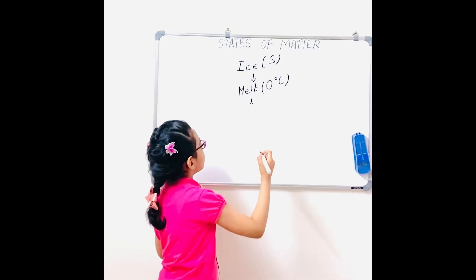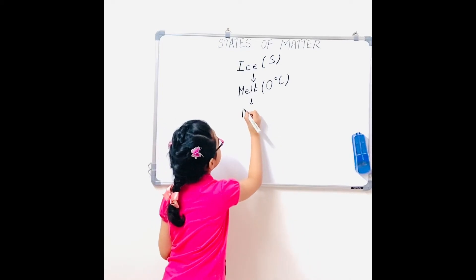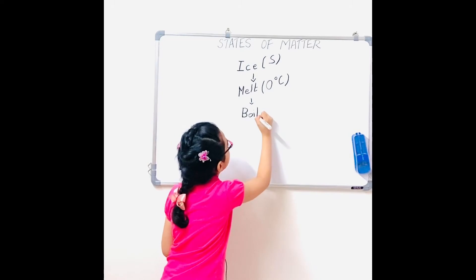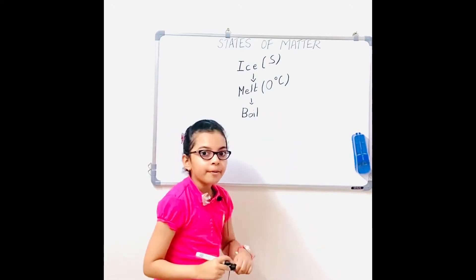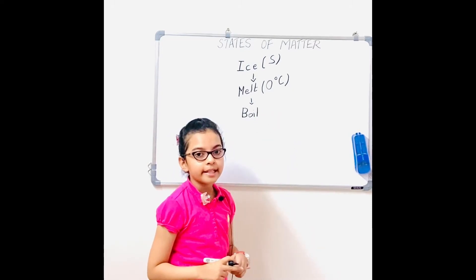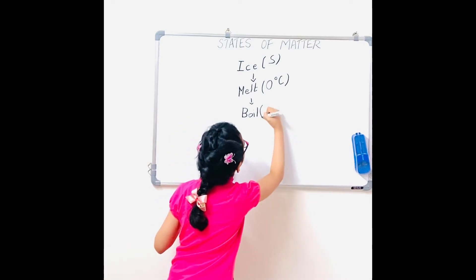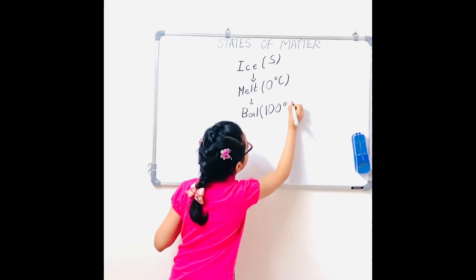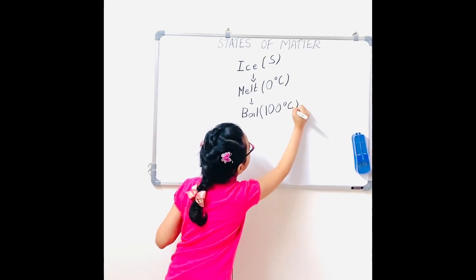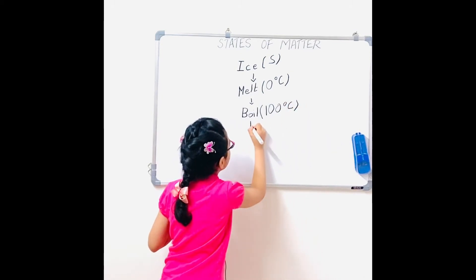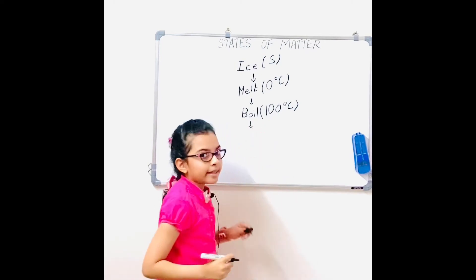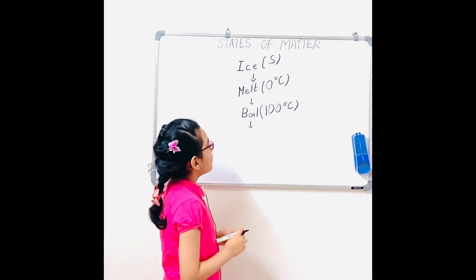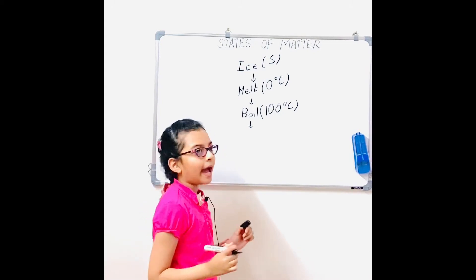After that, I boil it. The boiling point is at 100 degrees Celsius. Then evaporation takes place, and in evaporation it goes from liquid to gas.